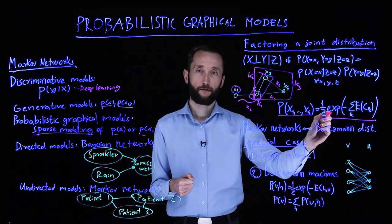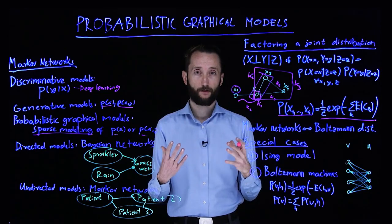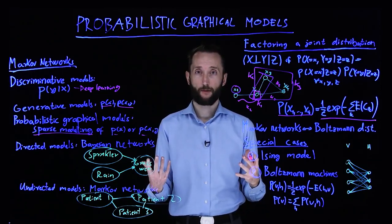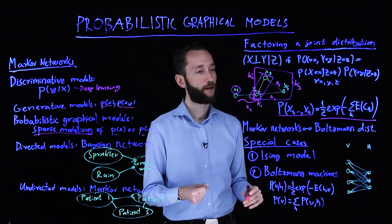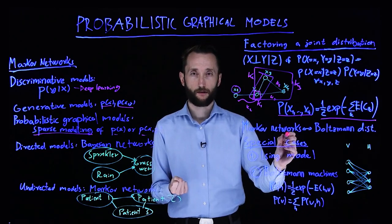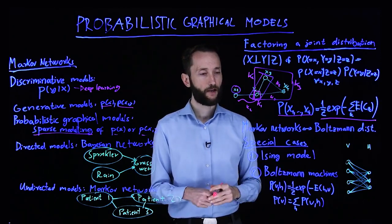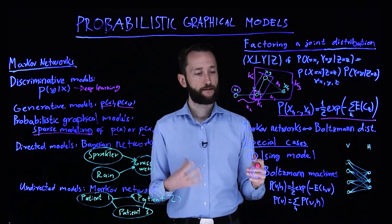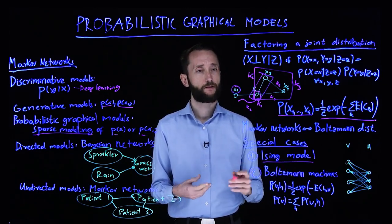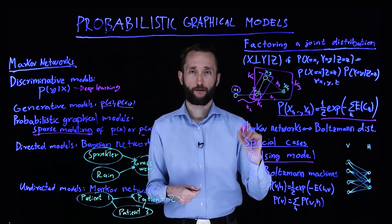This should look familiar because it has a very similar structure to a thermal state — the state that we get after equilibration in an open quantum system, or what we can approximate by the quantum approximate thermalization protocol. In fact, under very mild assumptions, there's a correspondence between Markov networks and the probability distributions they can describe and Boltzmann distributions. The Ising model is a special case, where our random variables are all binary and we only have k2s, not k3s.